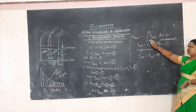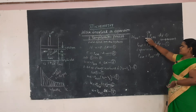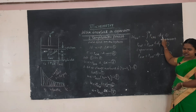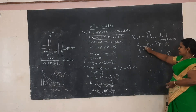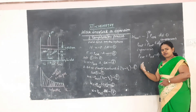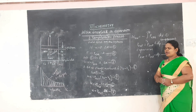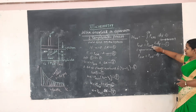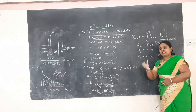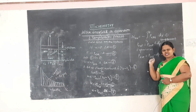For a reversible process, both forward and backward reactions take place simultaneously. W_reversible = -∫(V_i to V_f) P_ext dV. During compression, P_ext = P_int + dP, so external pressure is greater than the pressure of the system. During expansion, P_ext = P_int - dP, so external pressure is lesser than the pressure of the system.